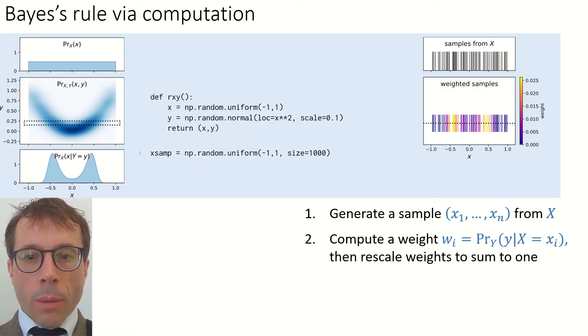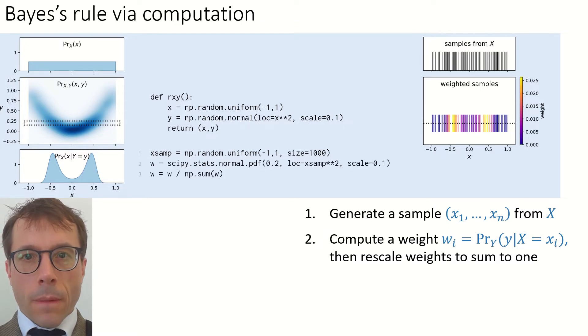Next step, we compute a weight wi for each one of these sampled x values. Let wi be the conditional likelihood of the observed y value, conditional on x taking value little xi. And we'll rescale the weights so they sum to 1. Here it is in code. In this particular example, y is normally distributed with mean x squared, so I let w be the pdf of the normal distribution with mean x squared. And I'm evaluating the pdf at y equals 0.2, the y value that we're conditioning on in this picture. In the diagram on the right, I'm showing the sampled x values again, but this time I'm color coding them by the weight wi.